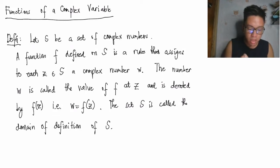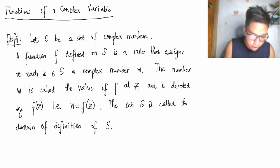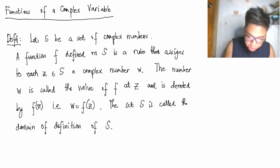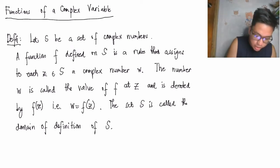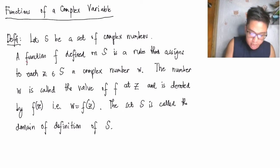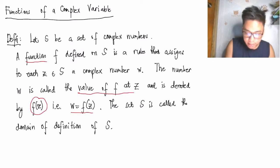Let's start. What does it mean — functions of a complex variable? Given that you have a set S, where S is a set of complex numbers, a function f defined on S is a rule that assigns to each z, which is a complex number, to a complex number w. The number w is called the value of f at z, and is denoted w = f(z).